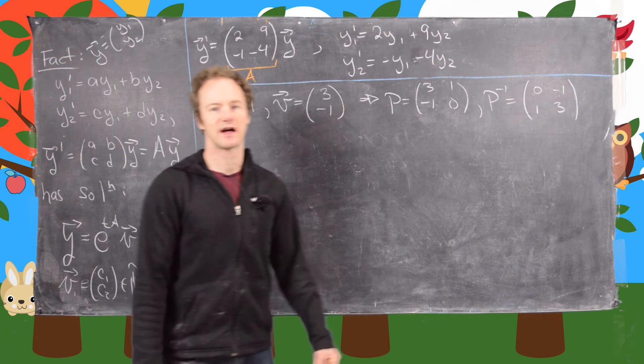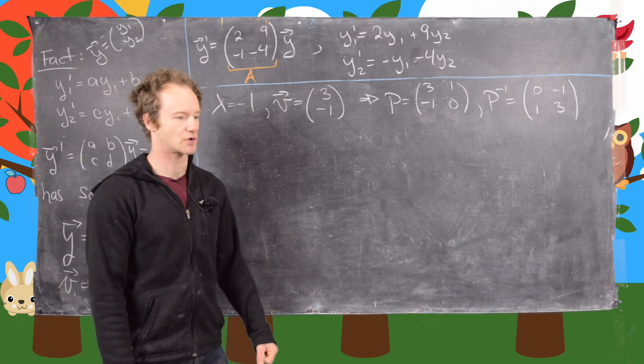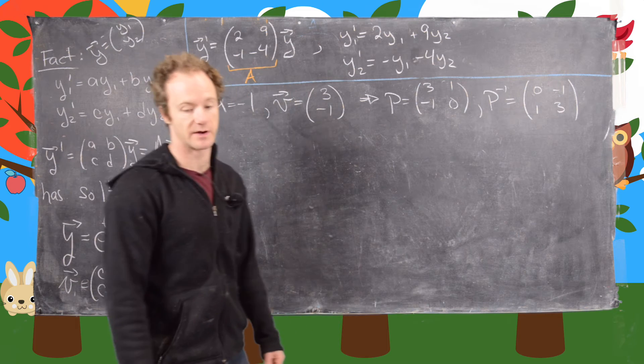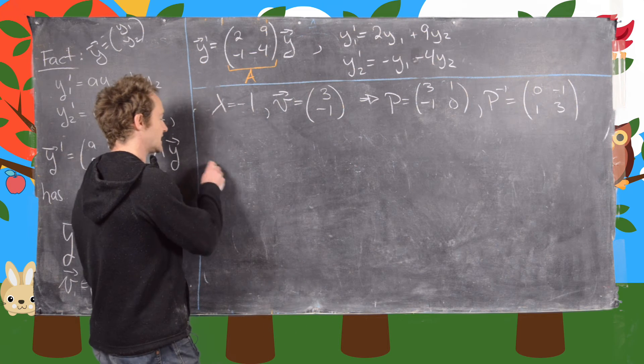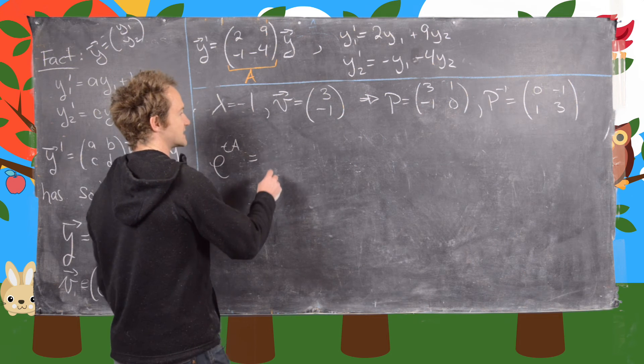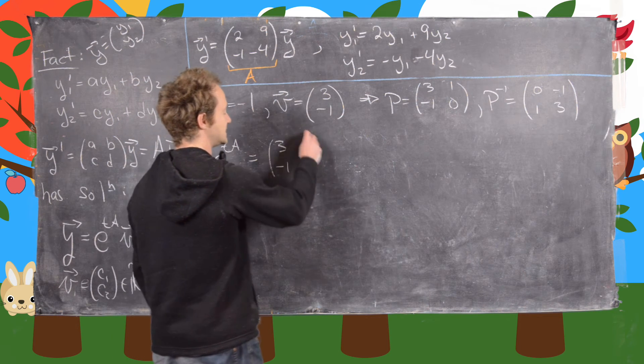So this is something called a generalized eigenvector, and it comes from the theory of Jordan canonical forms, which we're not going to go over here. And then P inverse is given by the following. And then from that, we can calculate e to the tA to b, so that's going to be P, so 3 minus 1, 1, 0.